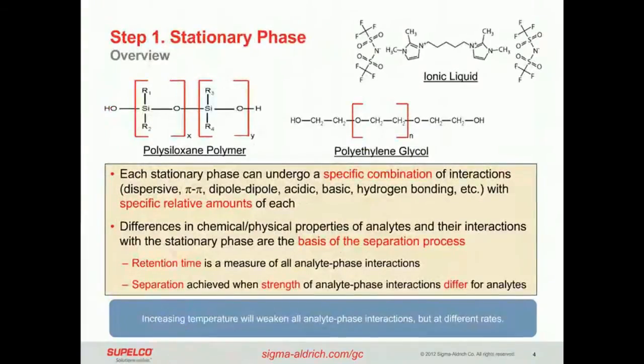So the first step, as I mentioned, is the stationary phase. We want to choose that before any other parameter. A few examples are shown here. The left-hand side is a polysiloxane polymer. The R groups can be a methyl, a phenyl, a cyanopropyl, a fluorinated side group of different degrees. Polysiloxane polymers have been used in GC since 1952.